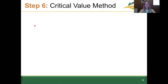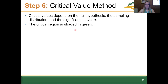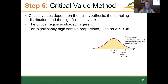Still within step six, critical values depend on the null hypothesis, the sampling distribution, and the significance level alpha. Critical values establish our critical regions — the critical region is shaded in green here. What separates the critical region from the other data points in the distribution is the critical value. There are some common values of alpha: 0.05, 0.01, and 0.1.